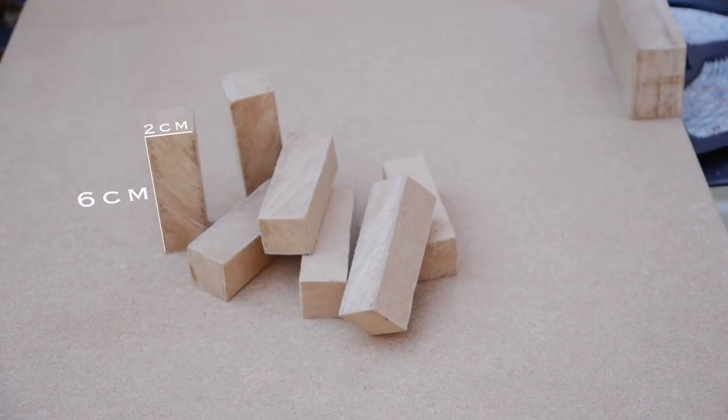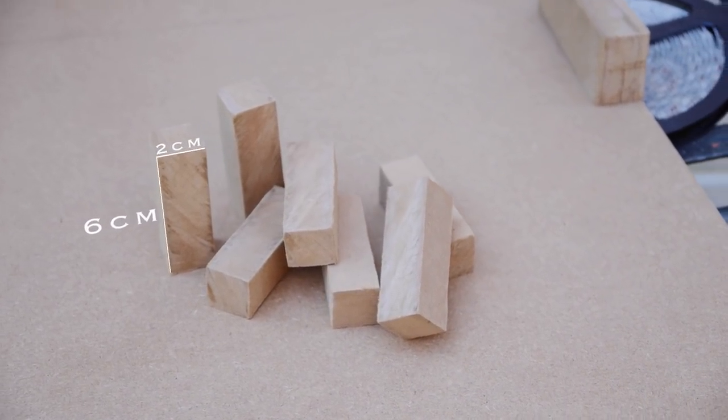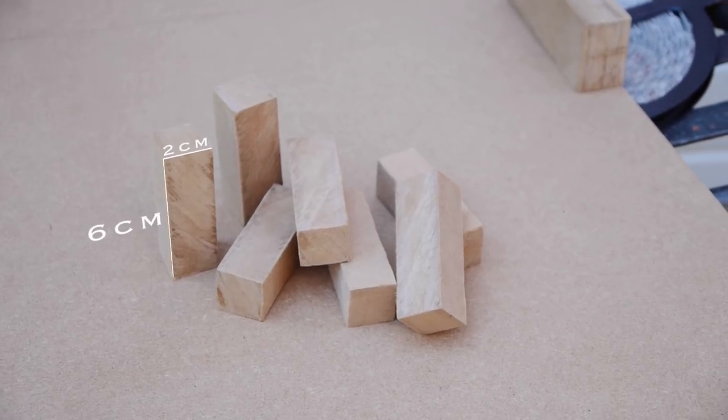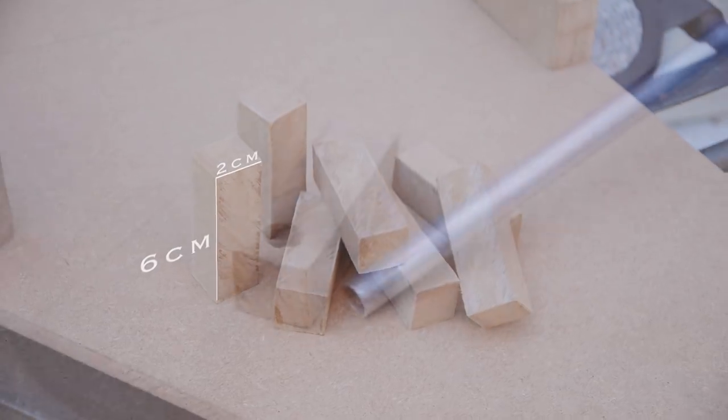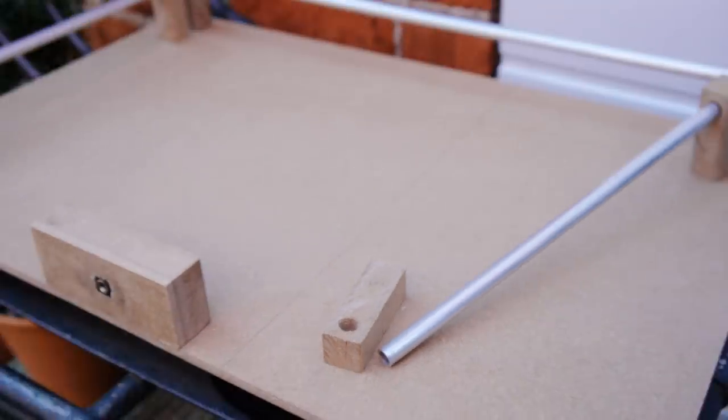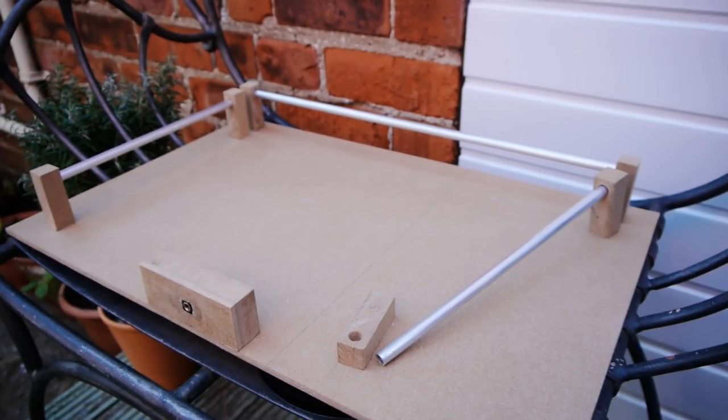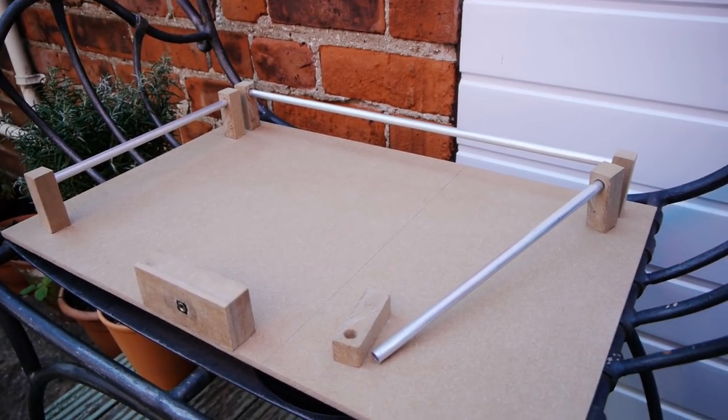Next, cut six blocks out of 18mm thick MDF. These need to be around 6cm high and 2cm wide. As they're going to be supports for the handles, you'll need to drill a hole into each for the handles to slot into. Once you're happy with the positioning, drill some pilot holes into the bottom of each support block and a corresponding hole through the back panel.